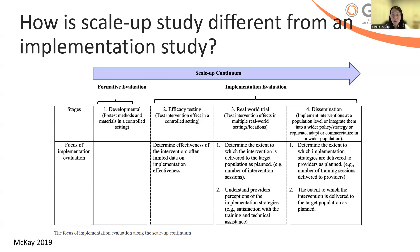There's a helpful diagram here by Heather McKay and colleagues, which highlights that scale-up sits amongst a continuum. What they propose is that as we continue to evaluate scale-up, you move away from focusing on measuring health outcomes and delivery of the core components of the intervention, toward looking at how well implementation strategies are delivered and measuring the extent to which the intervention is delivered to the target population. So you may no longer closely look at health data, but instead at how well training to deliver a program is delivered, or how people report adopting a particular program.